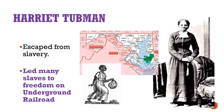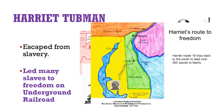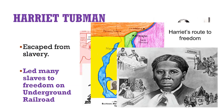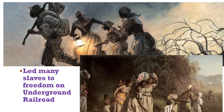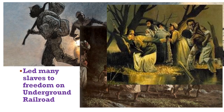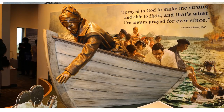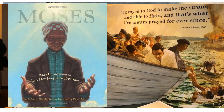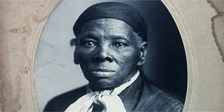Another famous abolitionist is a woman you may have heard of: an escaped slave named Harriet Tubman. She was born a slave on a plantation in Maryland. She later escaped from slavery, running away to Pennsylvania, where she earned her freedom. Tubman became famous as an Underground Railroad conductor. She led 19 different escapes from the South and helped around 300 slaves to escape. She was known as Moses, because like the Moses in the Bible, she led her people to freedom. Abolitionists celebrated her courage as more and more slaves used the Underground Railroad to find their freedom.